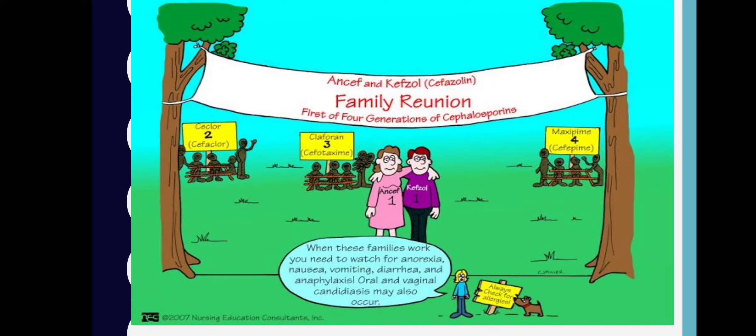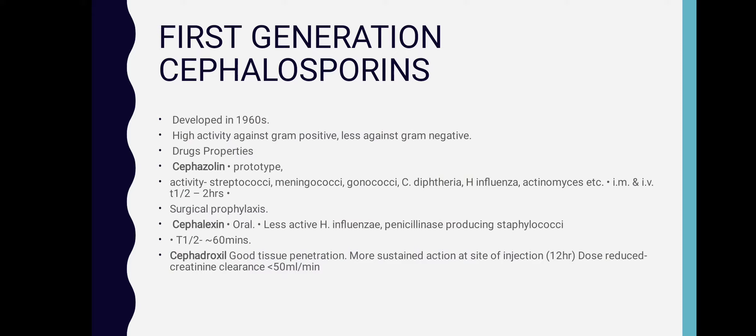When using this drug family, you need to watch for anorexia, nausea, vomiting, diarrhea, and anaphylaxis reactions. Oral and vaginal candidiasis may also occur. First generation cephalosporins were developed in the 1960s and are highly active against gram-positive organisms but less active against gram-negative organisms.